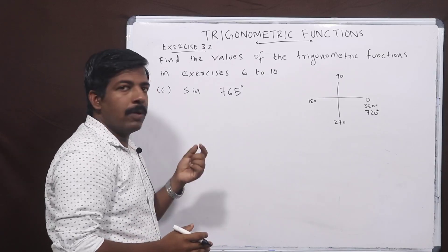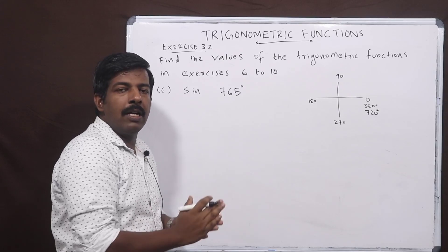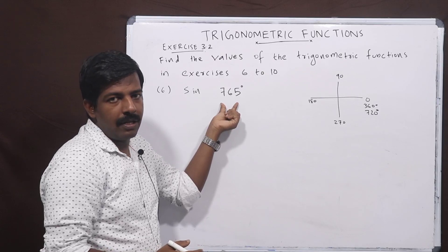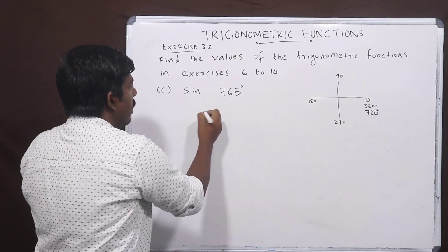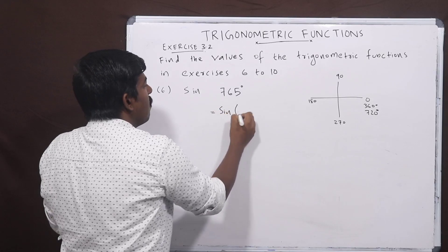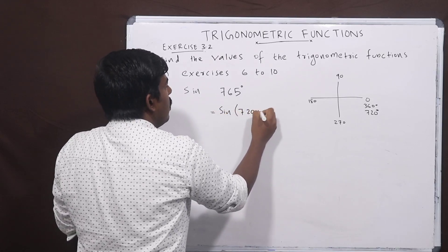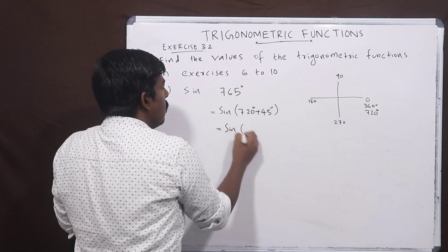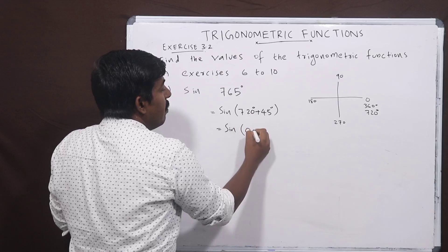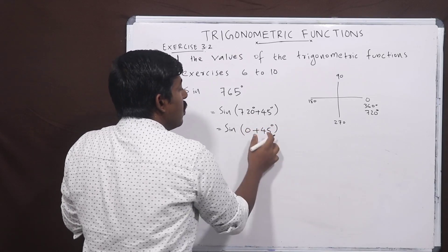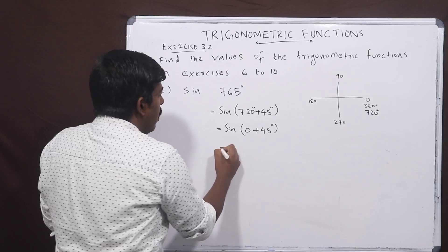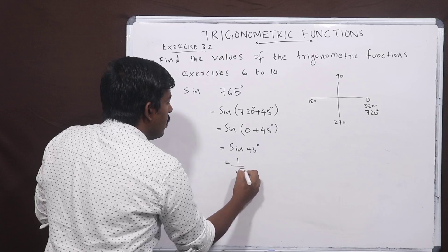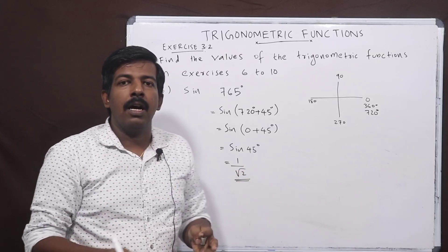Now we look at angle reduction. Every full revolution of 360 degrees brings us back to the same value. Sin of 720 plus 45 degrees: since 720 is a multiple of 360, it equals sin of 45 degrees, which is 1 by root 2. This is the answer.